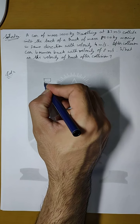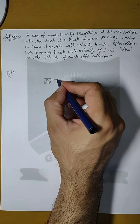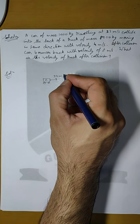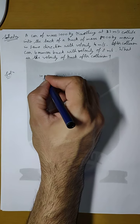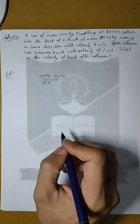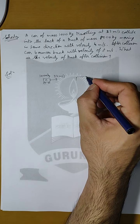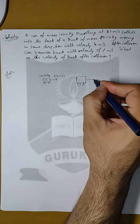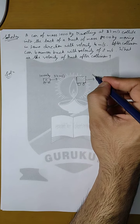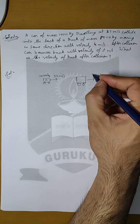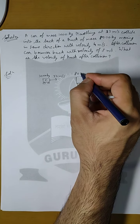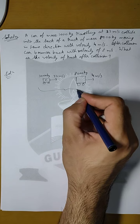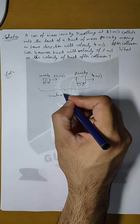There is a car moving in this direction with a speed of 32 meters per second, and the mass of the car is 1000 kg. There is a truck also moving in the same direction with a velocity of 4 meters per second, and the mass of the truck is 8000 kg. This is our initial condition.